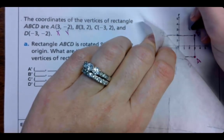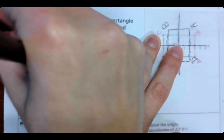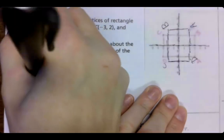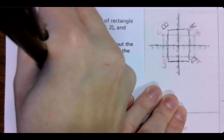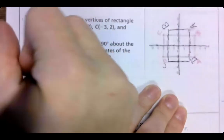We now have A prime at 2, 3. We now have B prime at negative 2, positive 3. We have C prime at negative 2, negative 3.